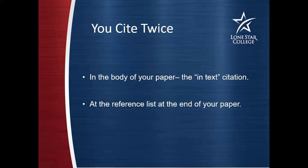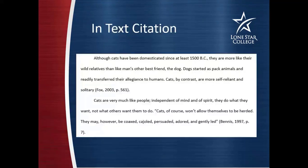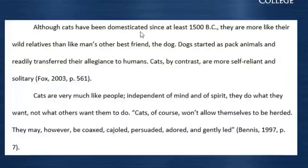In APA, MLA, and Chicago — all three major documentation styles — you cite twice. Their conceptual structure is very similar. You're going to cite in the body of your paper — that's called the in-text citation. Every time you use a source of information in the body of your paper, you cite it within your text. Then at the end of your paper, you provide a reference list that lists all the sources you used. Whether you cited a source once or a hundred times, you list it in your reference list once.